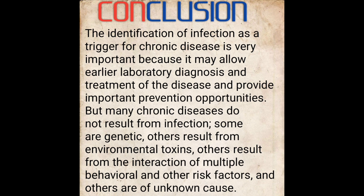Conclusion: The identification of infection as a trigger for chronic diseases is very important because it may allow earlier diagnosis and treatment of disease and provide important prevention opportunities. But many chronic diseases do not result from infection — some are genetic, others result from environmental toxins, others from the interaction of multiple behaviors and risk factors, and others are of unknown cause. And because they don't have any known cure, they continue to be chronic diseases.